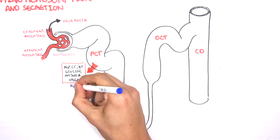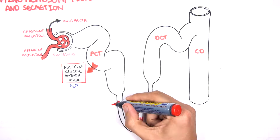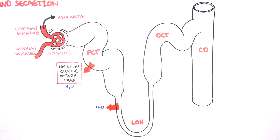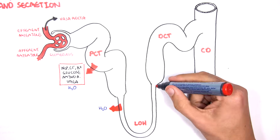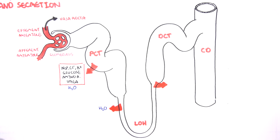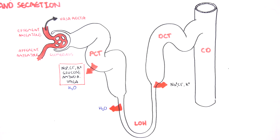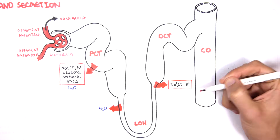In the descending limb of the loop of Henle, water reabsorption takes place. In the ascending limb of the loop of Henle — the going-up part — sodium, chloride, and potassium reabsorption occurs.